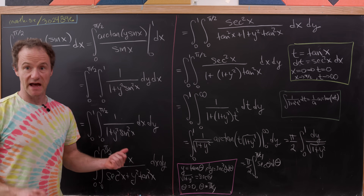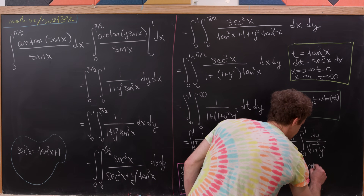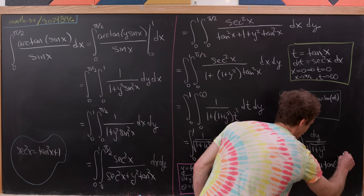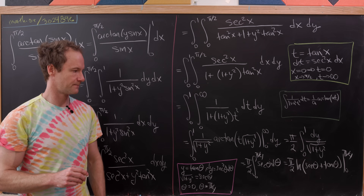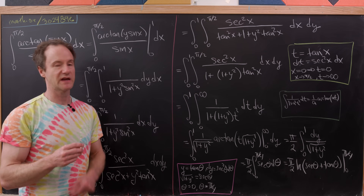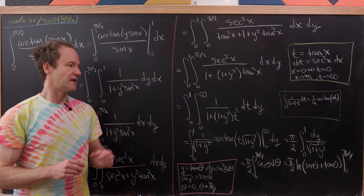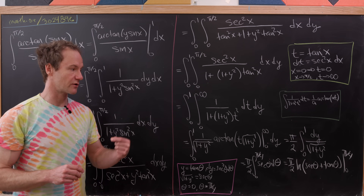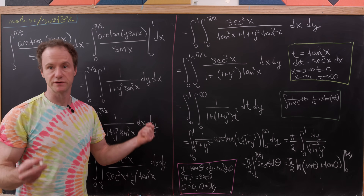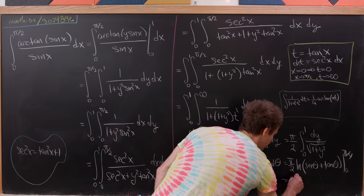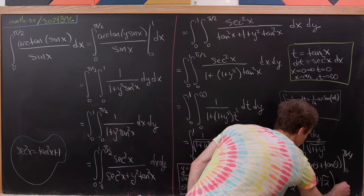The antiderivative of sec θ is ln|sec θ + tan θ|, and the absolute value isn't needed here since we're in a region where it's positive. Evaluating at θ = 0 gives ln(1) = 0. Evaluating at θ = π/4: cosine of π/4 is 1/√2, so secant is √2, and tangent is 1, giving √2 + 1. Our final answer is (π/2) · ln(1 + √2).